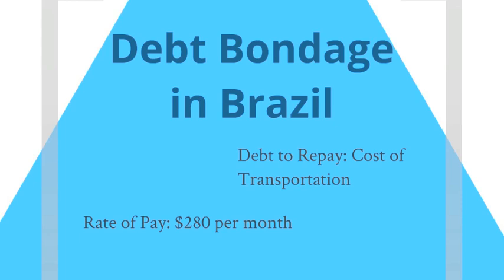In Brazil, workers or potential workers are offered a job out in the jungle where they will spend time making charcoal. What they don't know is that once they arrive, they are told they owe the owner money for transporting them and paying for their food along the way and at the camp. They are paid consistently $280 per month, and most of them do try to pay off this debt. Those who want to run away usually can't, because once they arrive at these camps, they have their IDs and their workers' cards taken away from them.